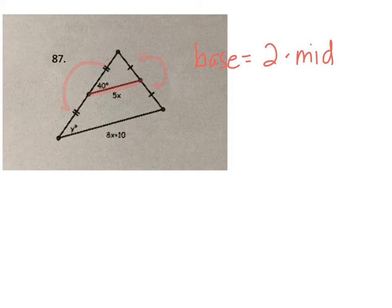So the base in this case is 8x plus 10. So 8x plus 10 equals 2 times the mid-segment length of 5x.